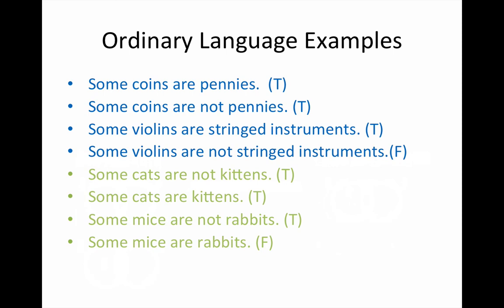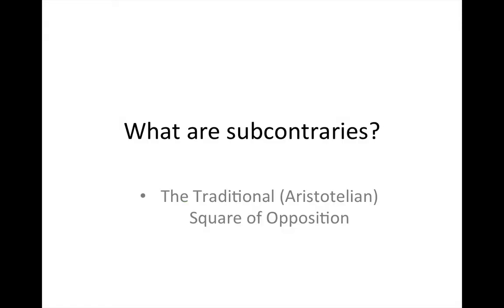So, that tells you that there is no determinate inference from a true particular to its subcontrary. I hope this tutorial on subcontraries is helpful to you as you study the traditional or Aristotelian square of opposition.